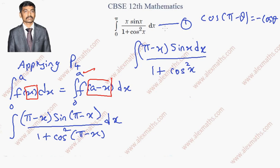Then, this question is first expression, which is capital I equal to, and this, after applying the property, the expression we got, we will take it as 2. Now, we are going to add 1 and 2.